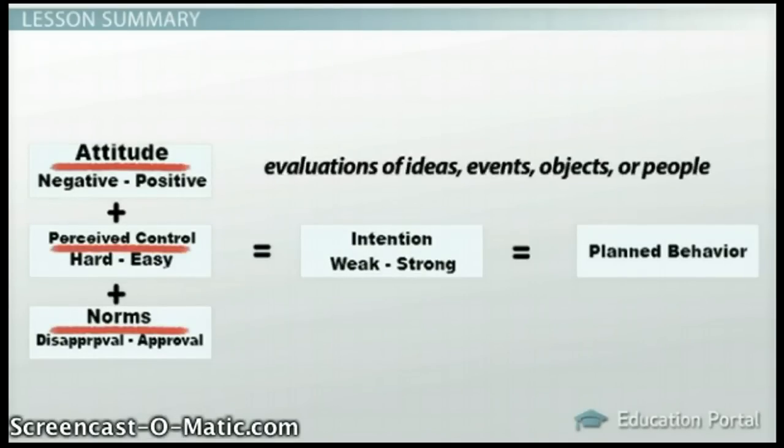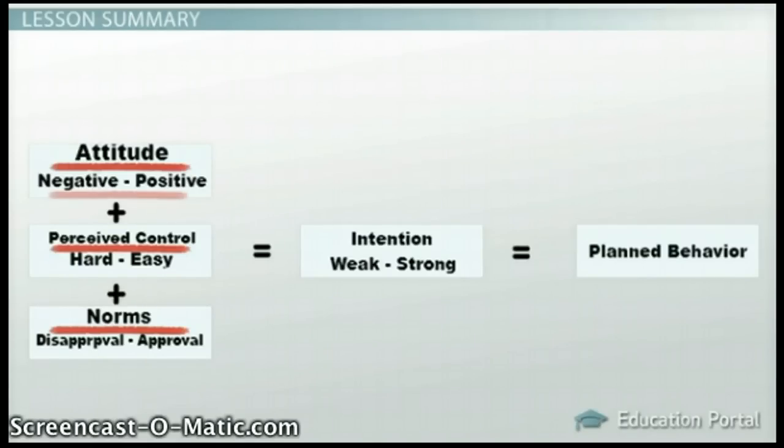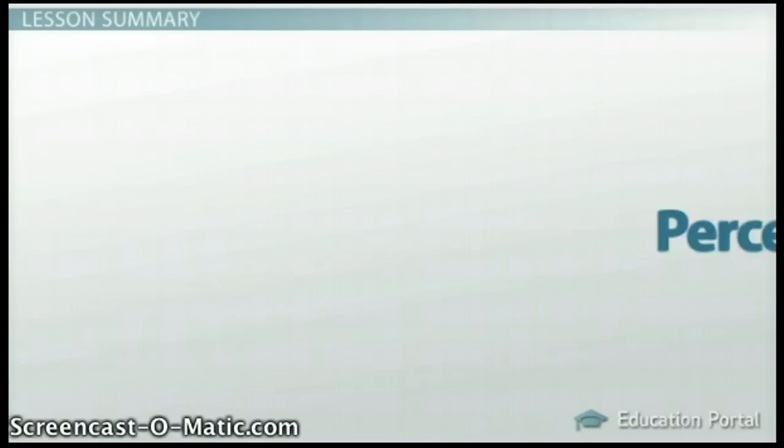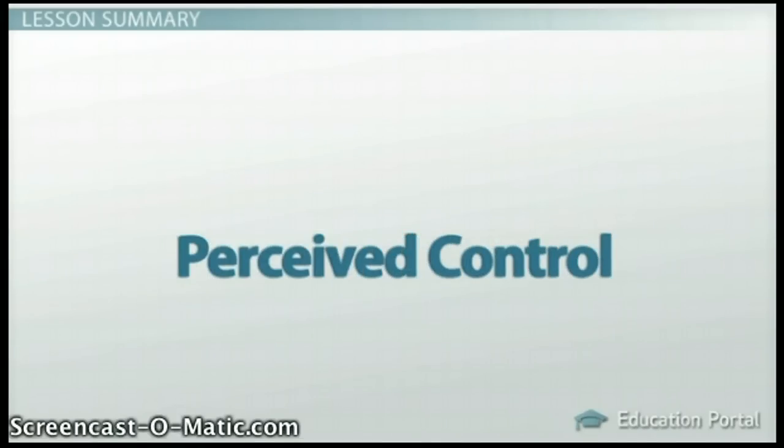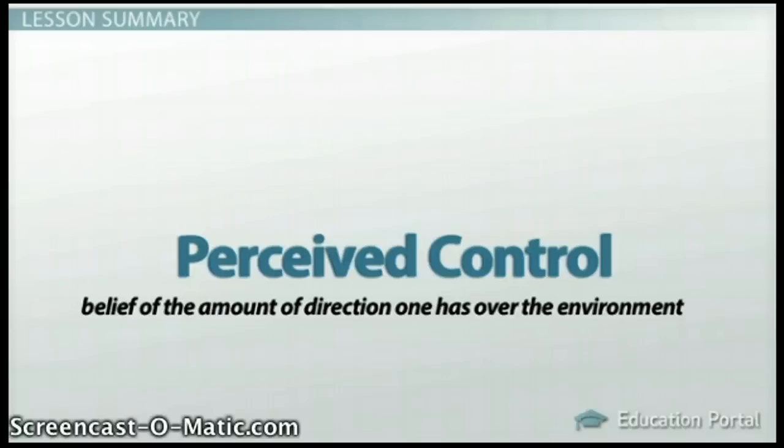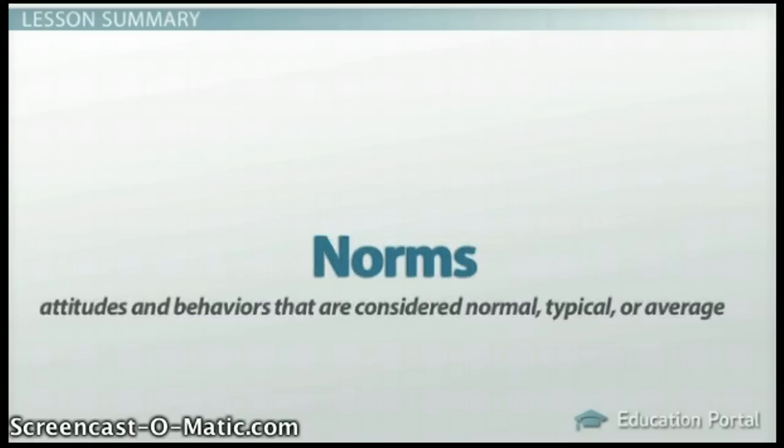Attitudes, which are evaluations of ideas, events, objects, or people, are generally positive or negative. Perceived control refers to the belief of the amount of direction one has over the environment, and it suggests if the task will be easy or difficult to accomplish. Norms are attitudes and behaviors that are considered normal, typical, or average, and they determine others' approval or disapproval of the behavior.